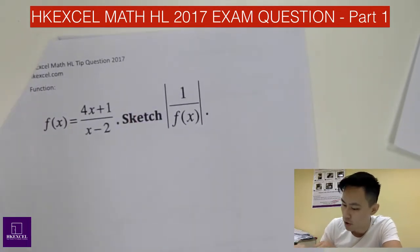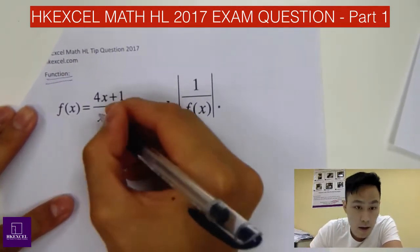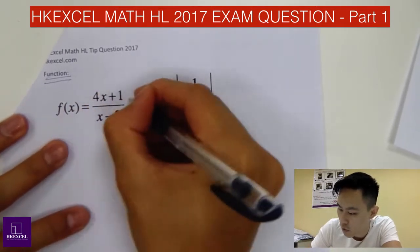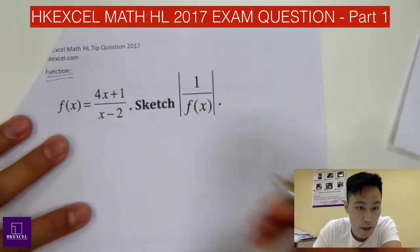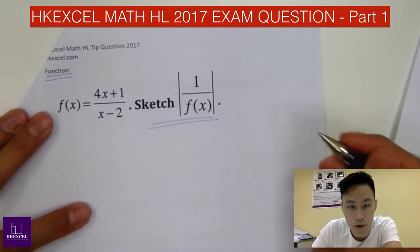The first question is on functions. You're given a rational function f(x) = (4x + 1) / (x - 2). So how do you sketch this one?